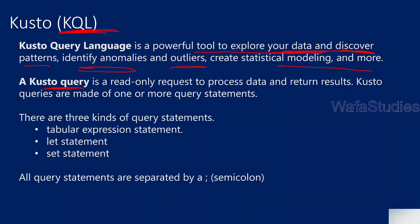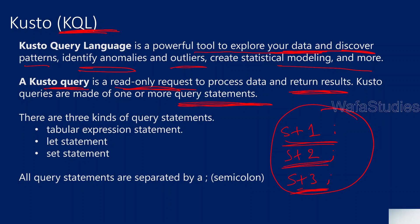KQL is a read-only request to the data — it processes it and returns results back. Kusto queries are made of Kusto statements, and each statement is separated by a semicolon. For example, statement 1 and statement 2 are separated by a semicolon, and the entire thing is called a Kusto query.